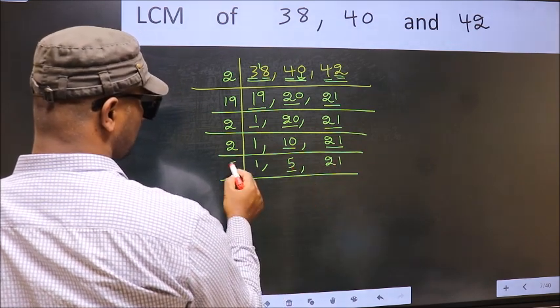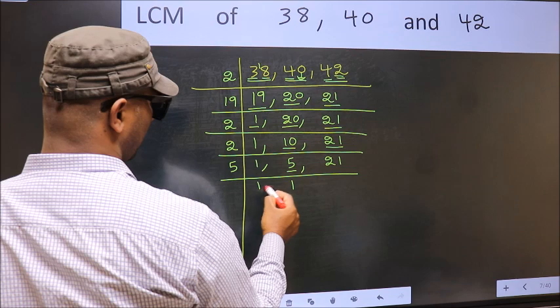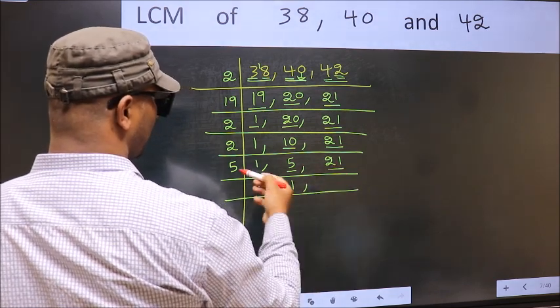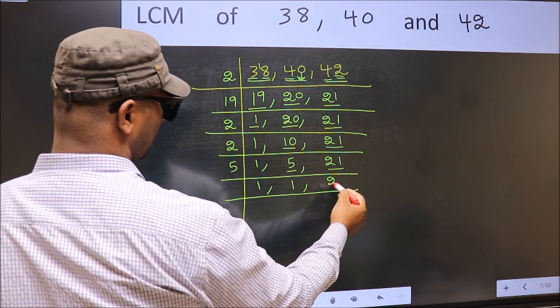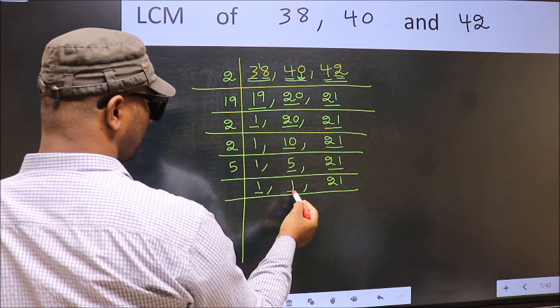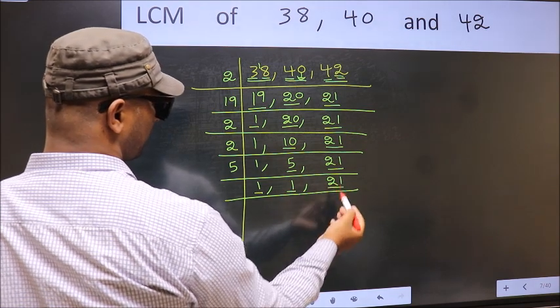Now here we have 5, 5 is a prime number, so 5 once is 5. The other number 21, not divisible by 5, so you write it down as it is. Now we got 1 here and here, so focus on the other number 21.